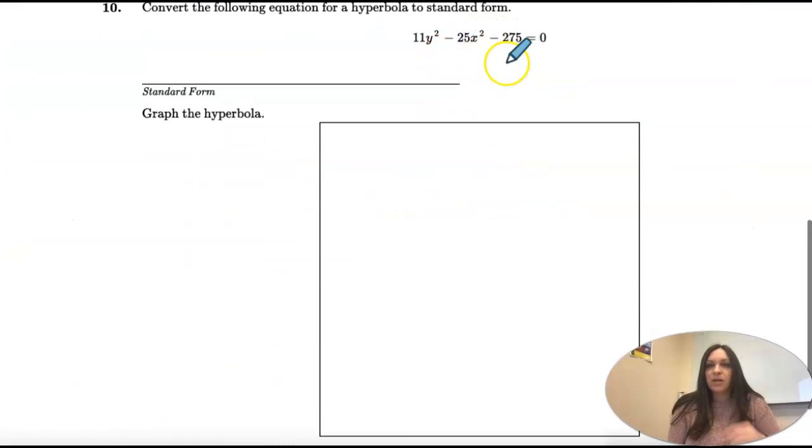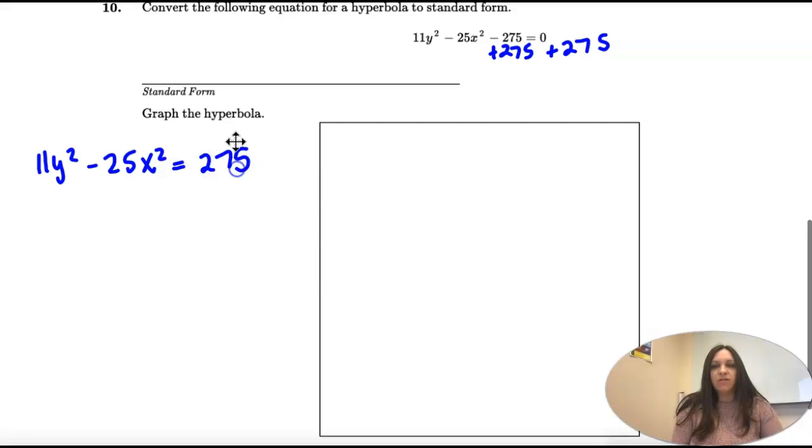So first, let's get x squared and y squared together by adding the 275 on both sides. So I'm going to bring it down here. We have 11y squared minus 25x squared equals 275.